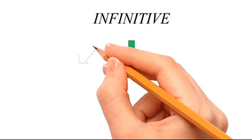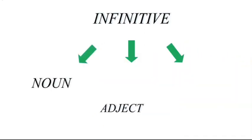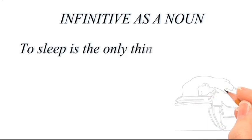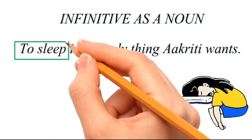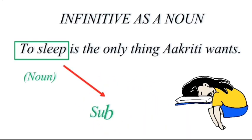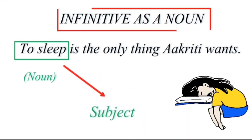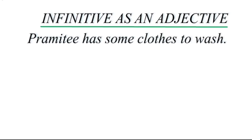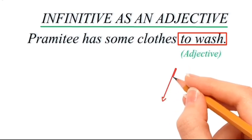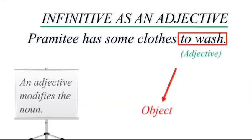Infinitives can be used as nouns, adjectives, or adverbs. Infinitive functioning as a noun: 'To sleep is the only thing Akriti wants' — 'to sleep' functions as the noun because it is the subject of the sentence. Infinitive functioning as an adjective: 'Preetie has some clothes to wash' — 'to wash' is an infinitive functioning as an adjective, modifying the noun 'clothes.'